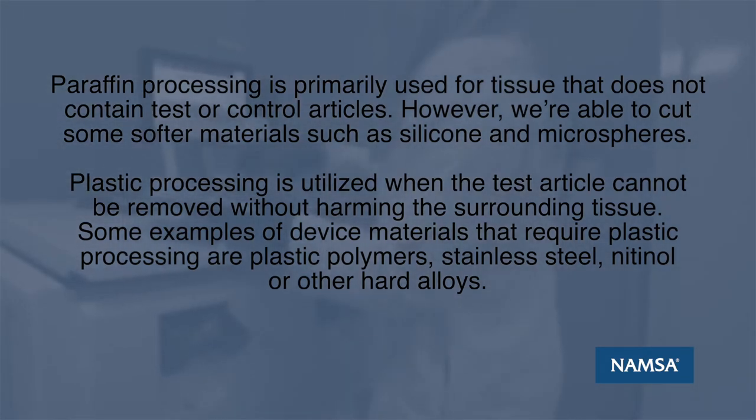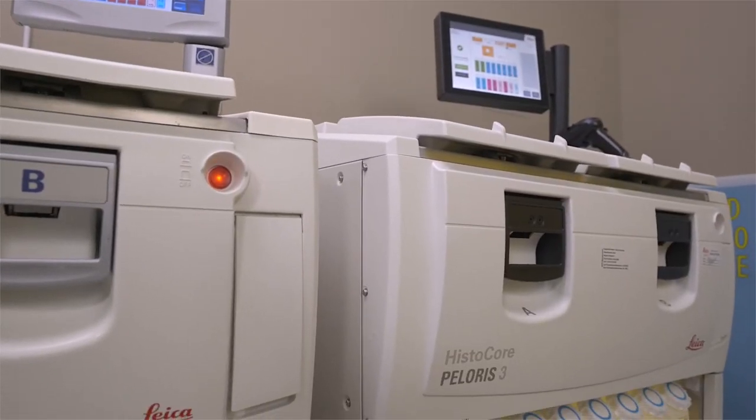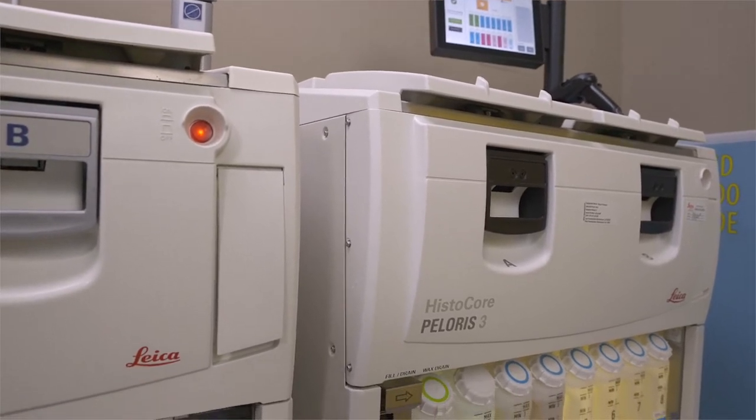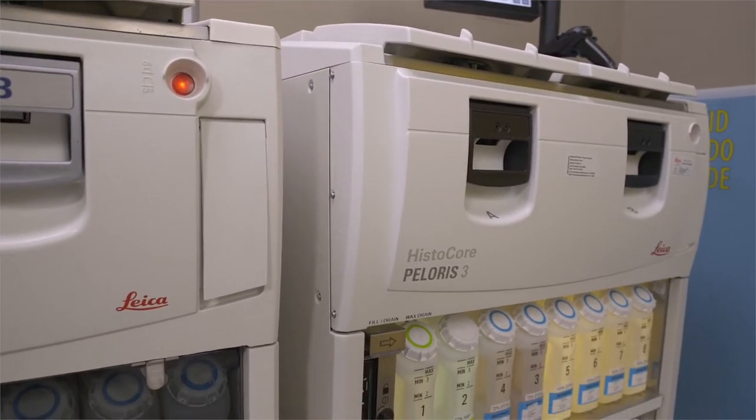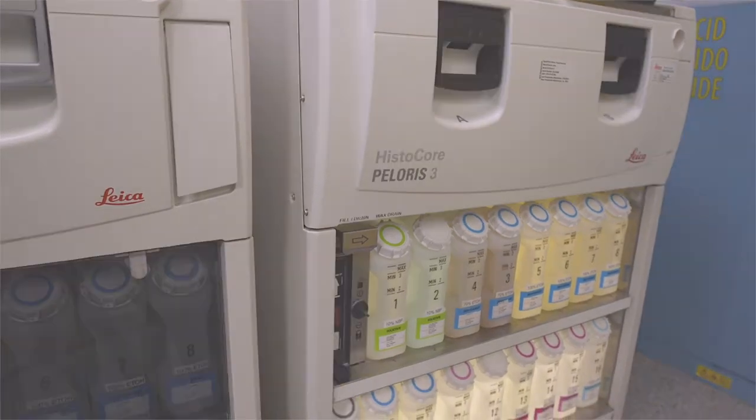Both paraffin and plastic processing require fixation of the tissue to halt cell autolysis and to preserve tissues permanently in a lifelike state. Once fixed, the water contained in the tissue is replaced with either paraffin wax or a plastic polymer.